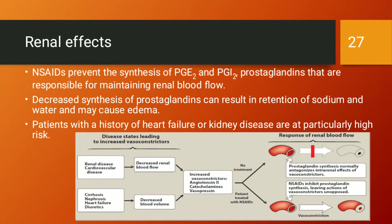In disease states such as renal disease, cardiovascular disease, cirrhosis, nephrosis, heart failure, or with diuretic use, there is decreased renal blood flow and increased vasoconstrictors such as angiotensin II and vasopressin. Normally, prostaglandin synthesis antagonizes intrarenal effects of these vasoconstrictors, keeping blood vessels patent. When NSAIDs are given, they inhibit prostaglandin synthesis, leaving vasoconstrictor actions unopposed.